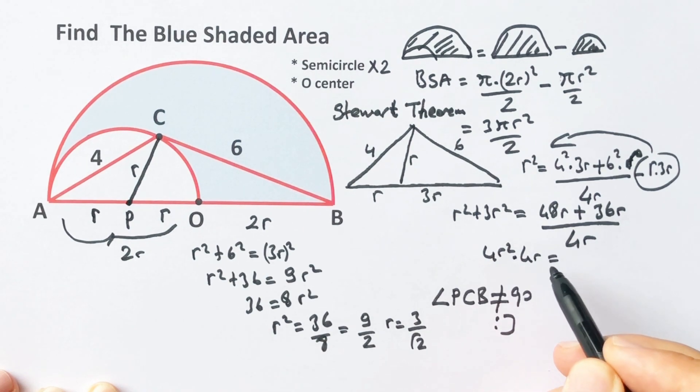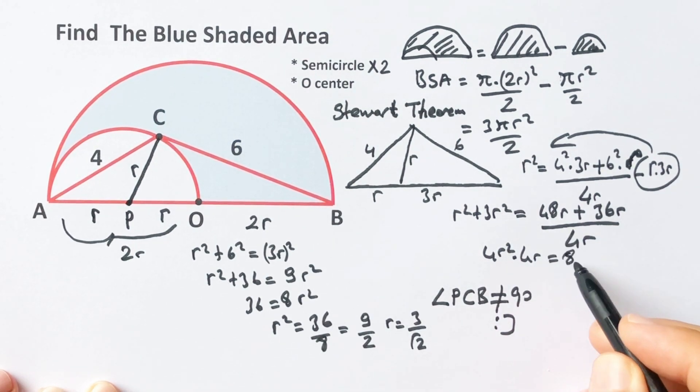4r² times 4r equals 84r, so 16r³ equals 84r.